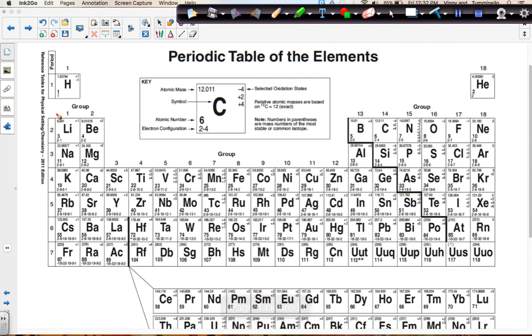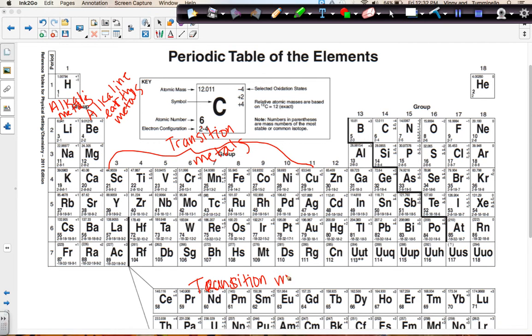We have some different groups. Group one, remember first of all that our groups are the columns, they're also called families, and that group one is known as the alkali metals. Group two is known as the alkaline earth metals. From 3 to 11 we have transition metals, which again remember that includes the lanthanides and the actinides.